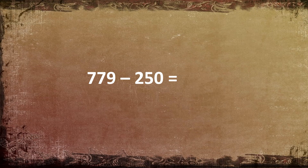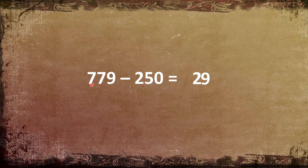Now let us solve the exercise. 779 minus 250. 9 minus 0, we get 9. 7 minus 5, we get 2. 7 minus 2, we get 5. So the answer will be 529. 779 minus 250 is equal to 529.